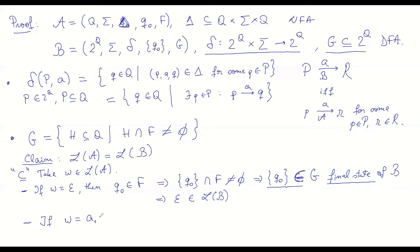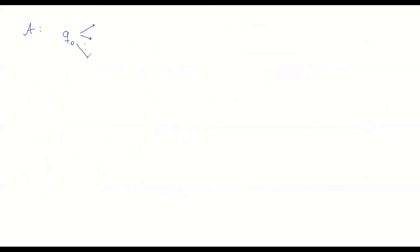If W is of the form A1, A2, ..., An with n ≥ 1, then I'm going to consider all the computations in automaton A with this input word. In automaton A, I start with Q0, and with letter A1, I could have any one of these transitions, leading me to states Q1,1 and Q1,2 and maybe Q1,i1. And I'm building a corresponding computation in automaton B, which starts from the initial state {Q0}.